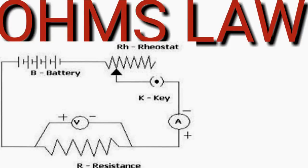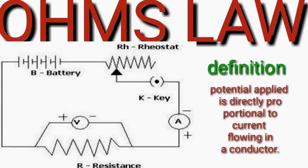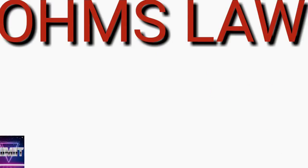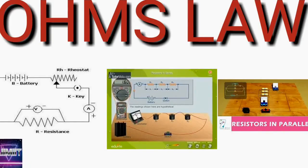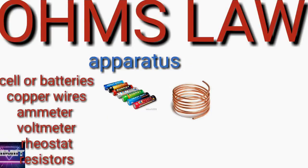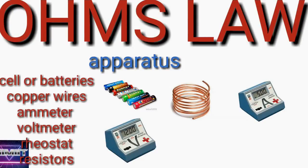Coming to the definition of Ohm's law: the potential applied is directly proportional to the current flowing in a conductor. Please check out the circuit given in the figure — it has some batteries, one resistance, a voltmeter connected in parallel, and an ammeter connected in series, along with one rheostat to regulate the current. The first diagram is individual resistance, the second is resistors in series, and the third is resistance in parallel.